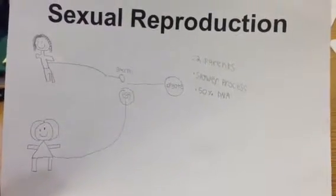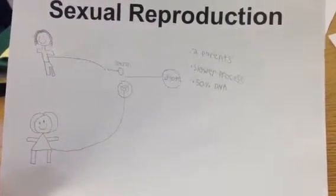The baby is processed over nine months, and it contains 50% of the DNA from each parent.